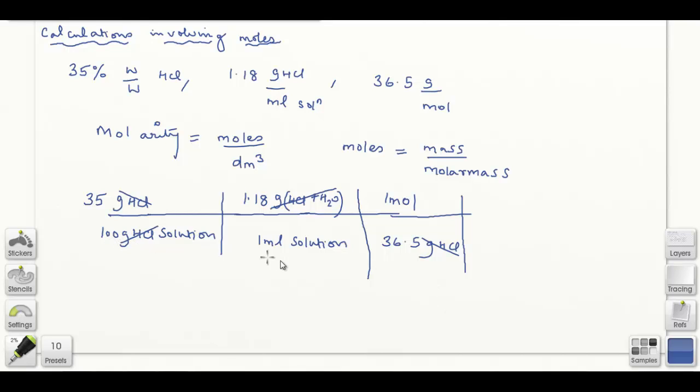I have 100 milliliters in the denominator. If I multiply and divide by 10, I get 35 times 1.18 times 10, divided by 100 times 10, which is 1000 milliliters. This is the same as one decimeter cubed.